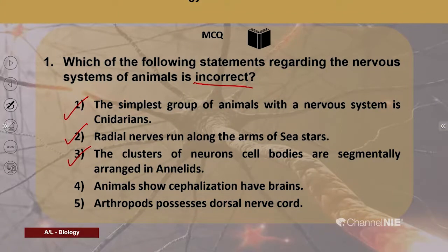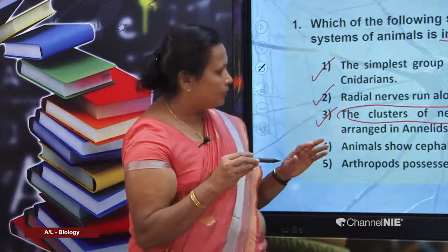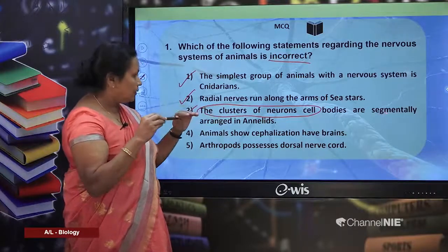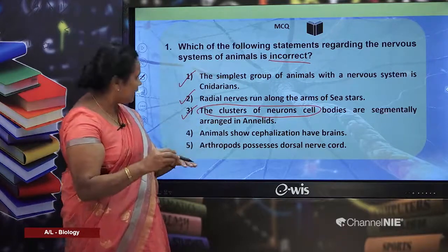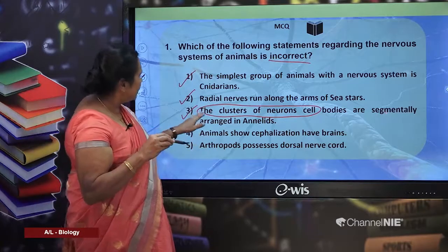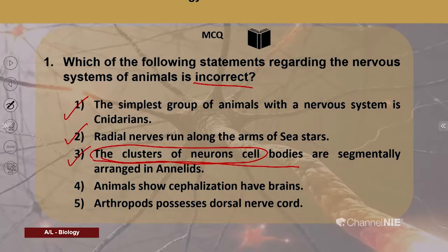In exams, you may not always get the direct term 'ganglia' — instead you may get its definition: 'clusters of neuron cell bodies.' You need to recognise that this refers to ganglia. Ganglia are segmentally arranged in annelids — this is a correct answer. If a student doesn't know that clusters of neuron cell bodies are ganglia, they cannot find the answer.